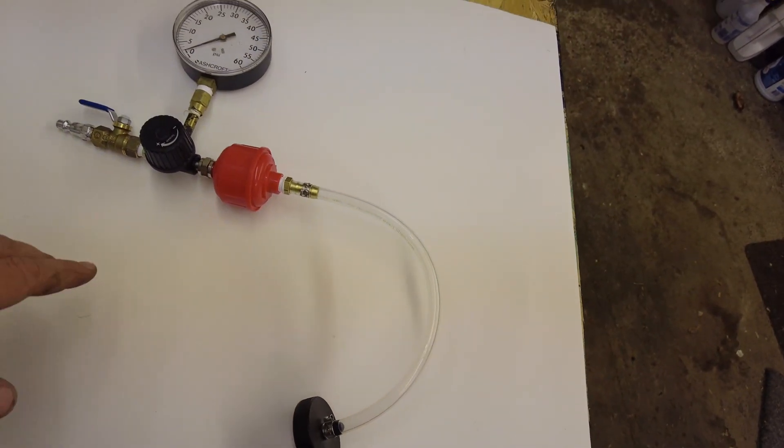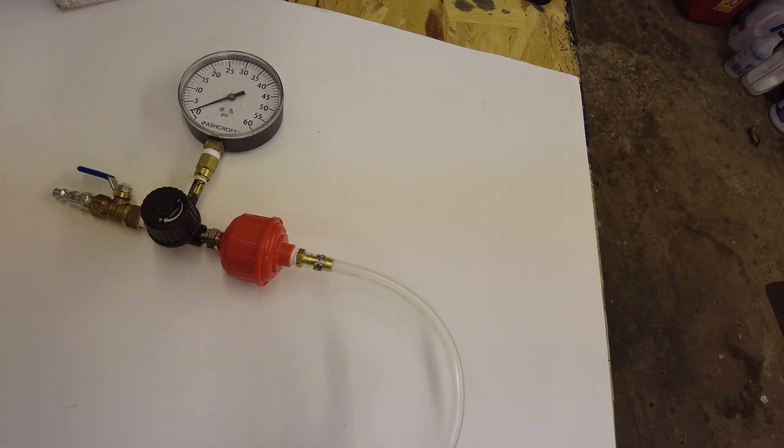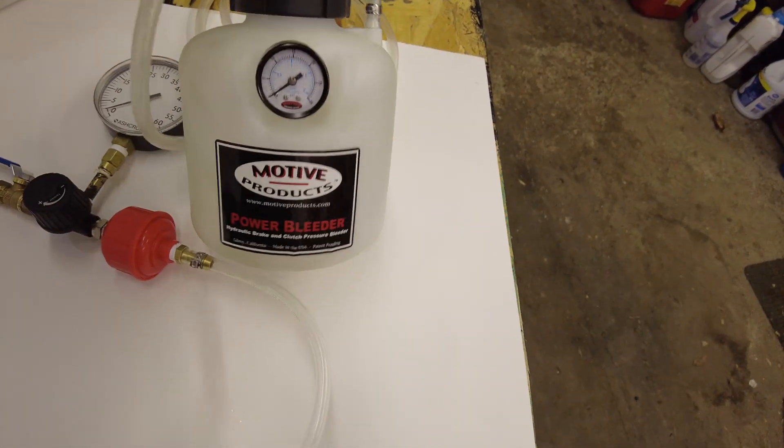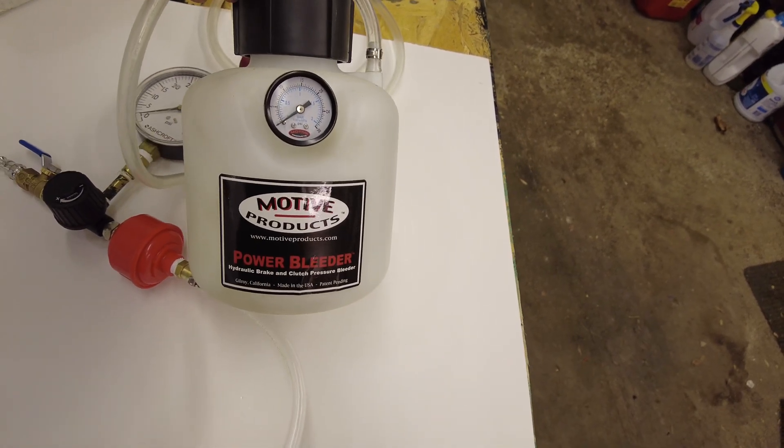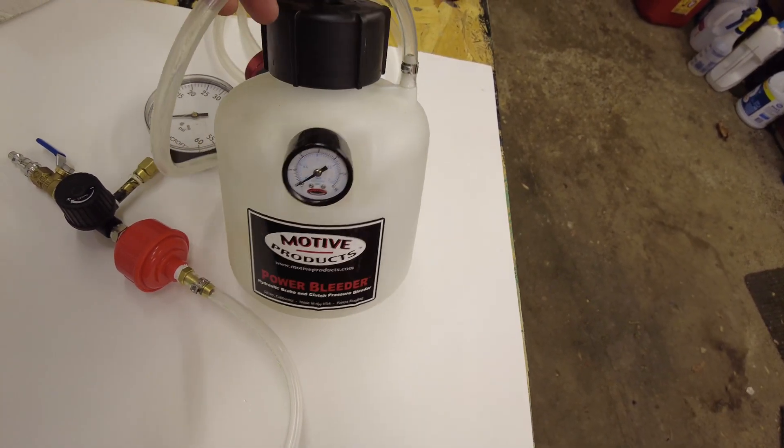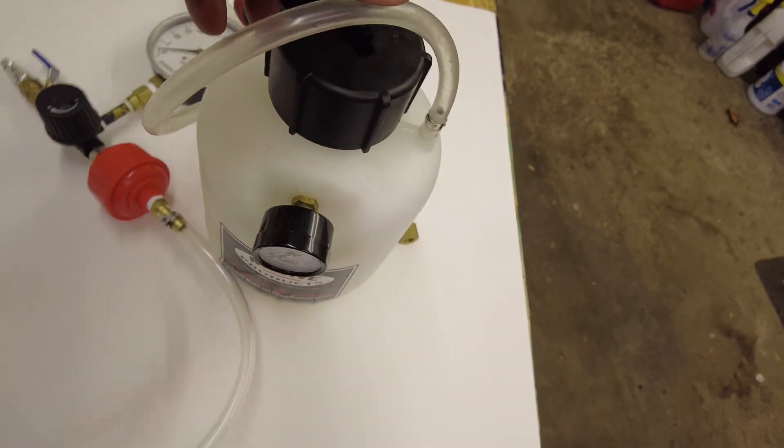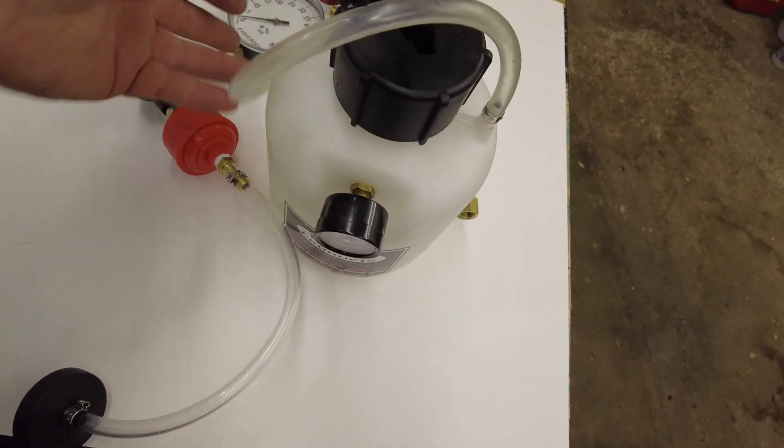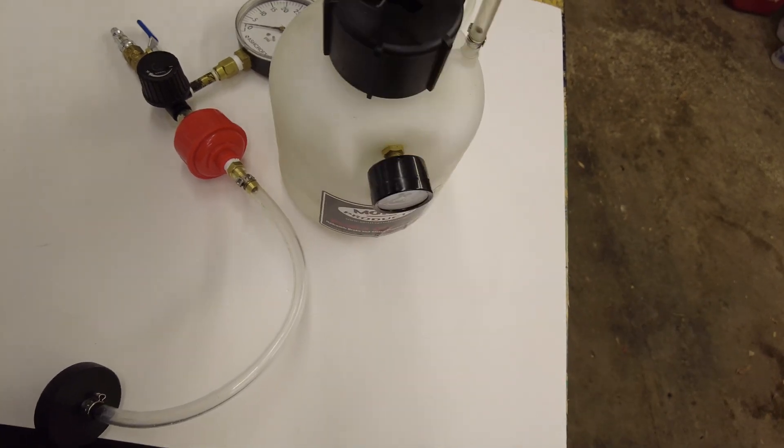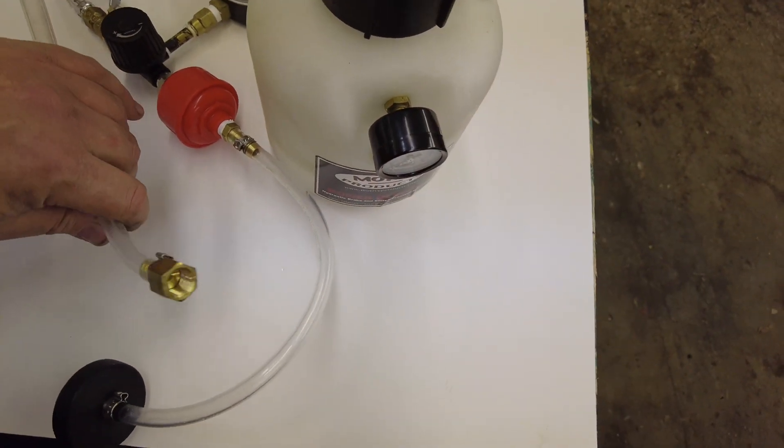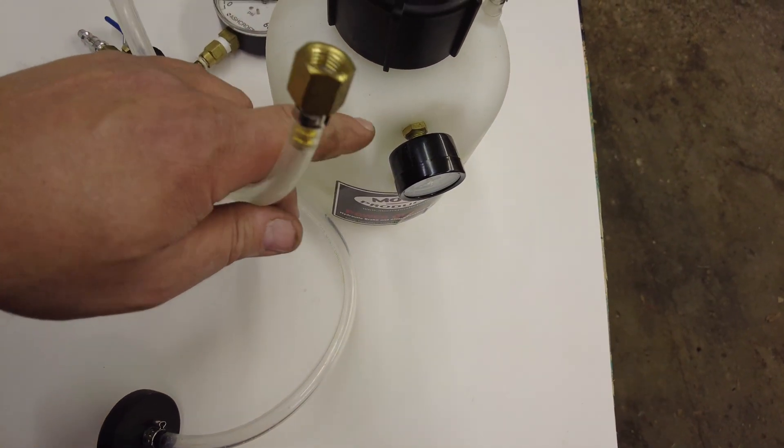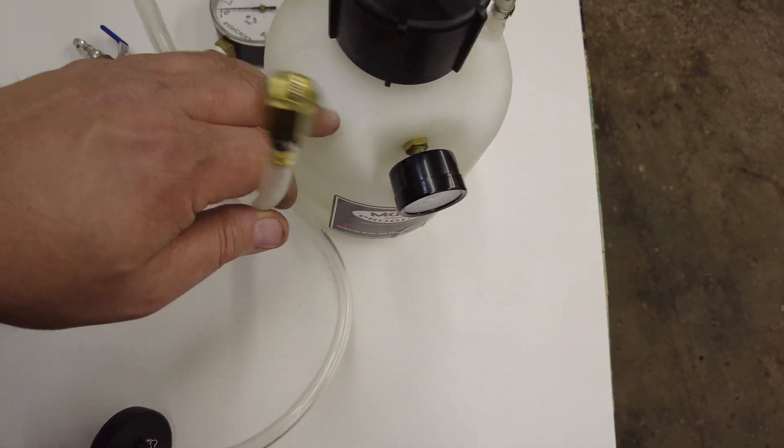Instead of using the typical Motive bleeder like I've used before, you can use this thing two different ways. You can either fill it full of liquid brake fluid and then it will keep your master cylinder full of fluid and pressurized while you're bleeding your brakes, or you can use this just as a pressure supply - no liquid in the tank, you just pump it up with air.